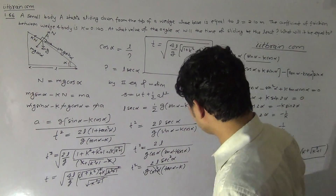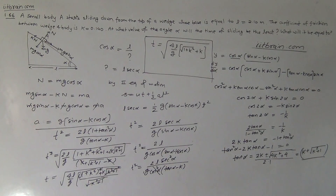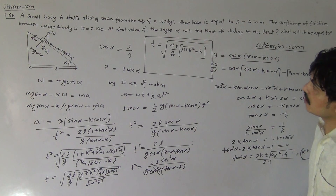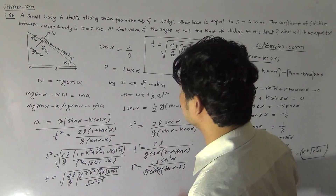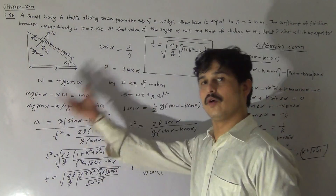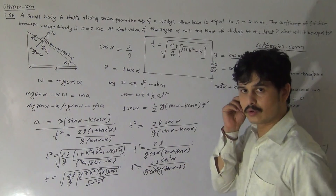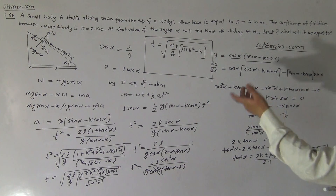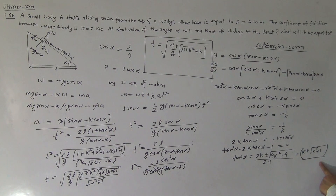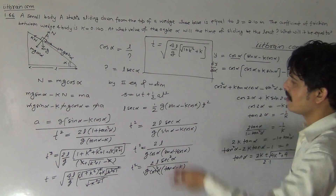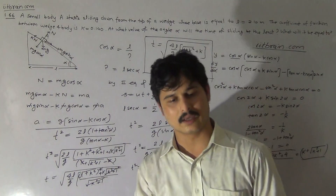So the final answers are: the angle for least time is given by tan alpha equals K plus root(K squared plus 1), and the minimum time is T equals root of 4L over G times (root(K squared plus 1) plus K). Thank you.